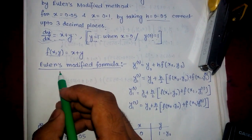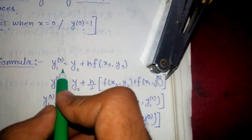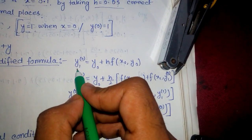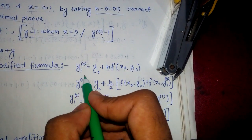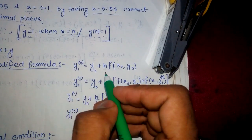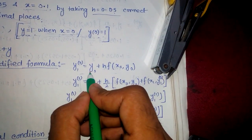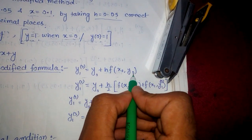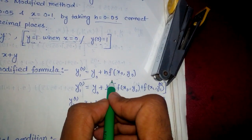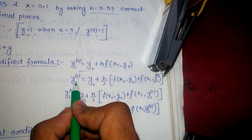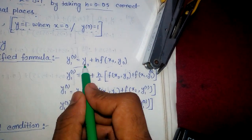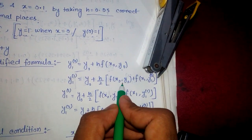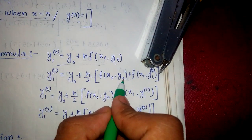We will use Euler's modified formula, which we have to understand very carefully. To calculate y1, we calculate several iterations. The first approximation is: y1⁰ equals y naught plus h times f(x naught, y naught). You have to remember this formula — there is no shortcut. After that, y1¹ equals y naught plus (h/2) times [f(x naught, y naught) plus f(x1, y1⁰)].